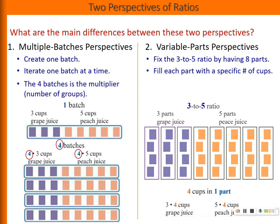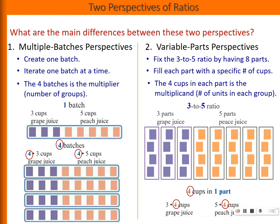For the multiple batch perspective, the four is actually the multiplier — it refers to the number of groups. Whereas for the variable parts perspective, the four is actually the multiplicant — it refers to the number of units in each group.